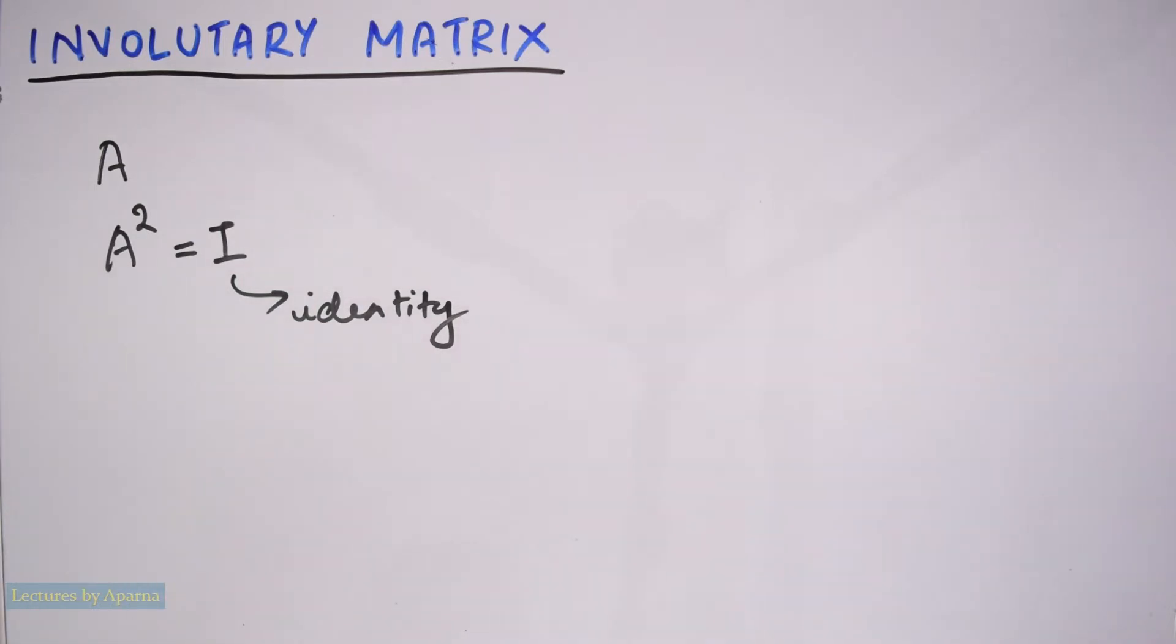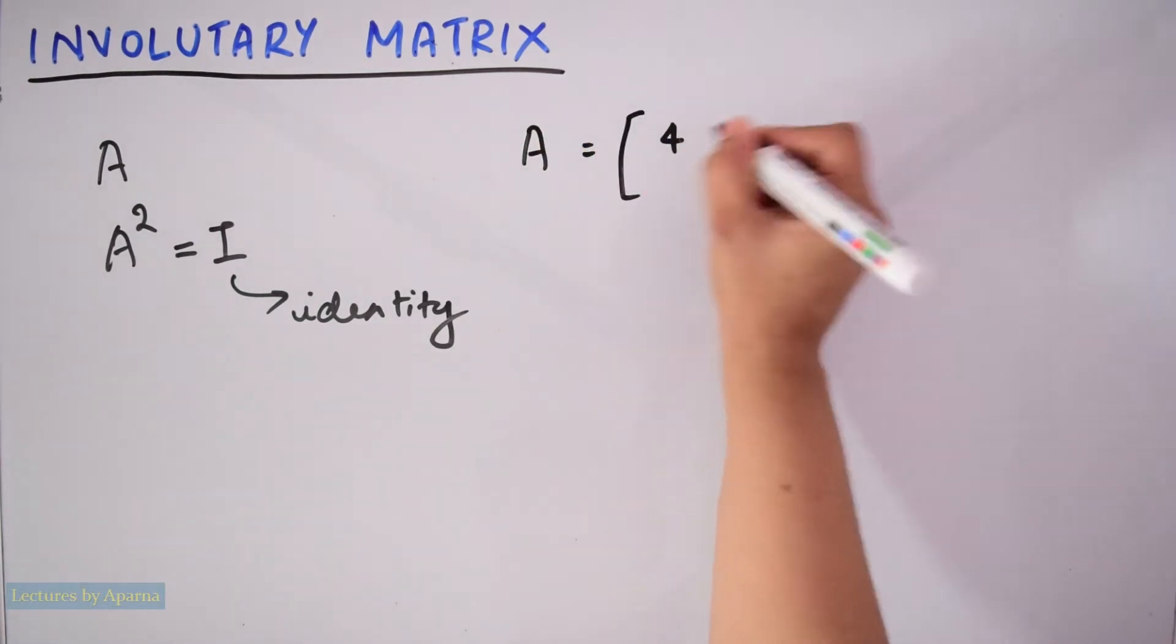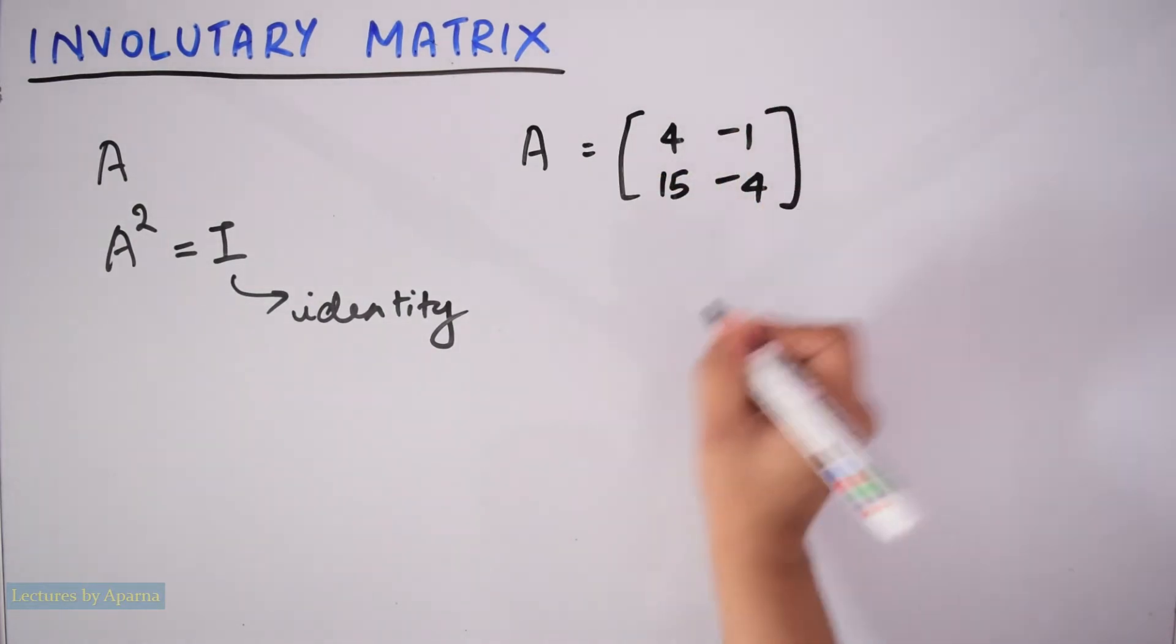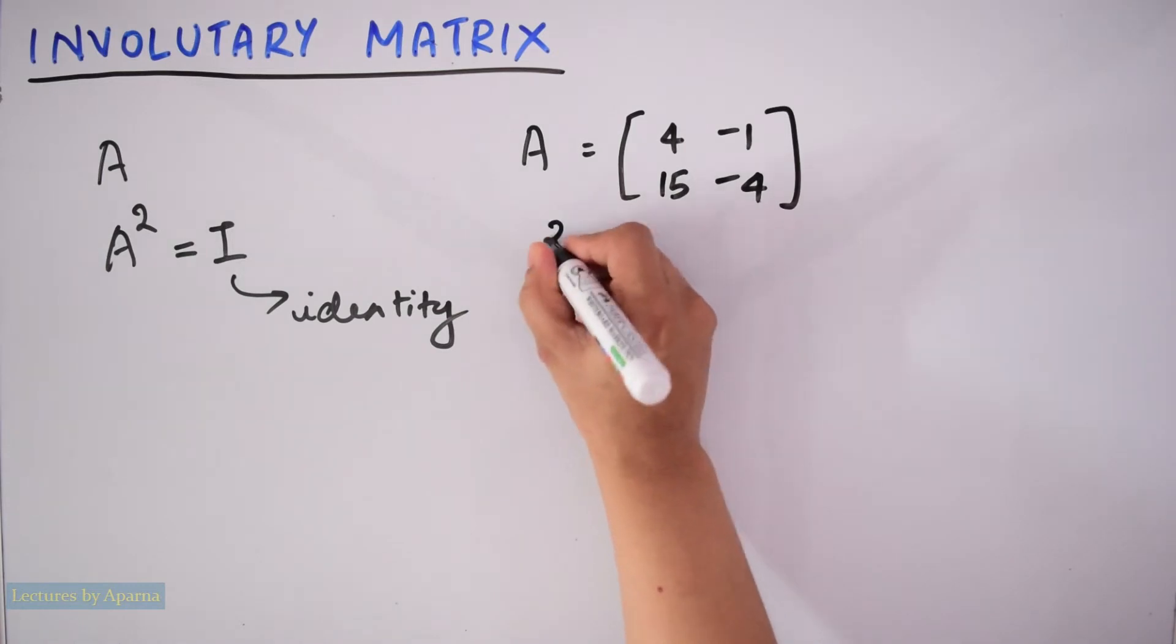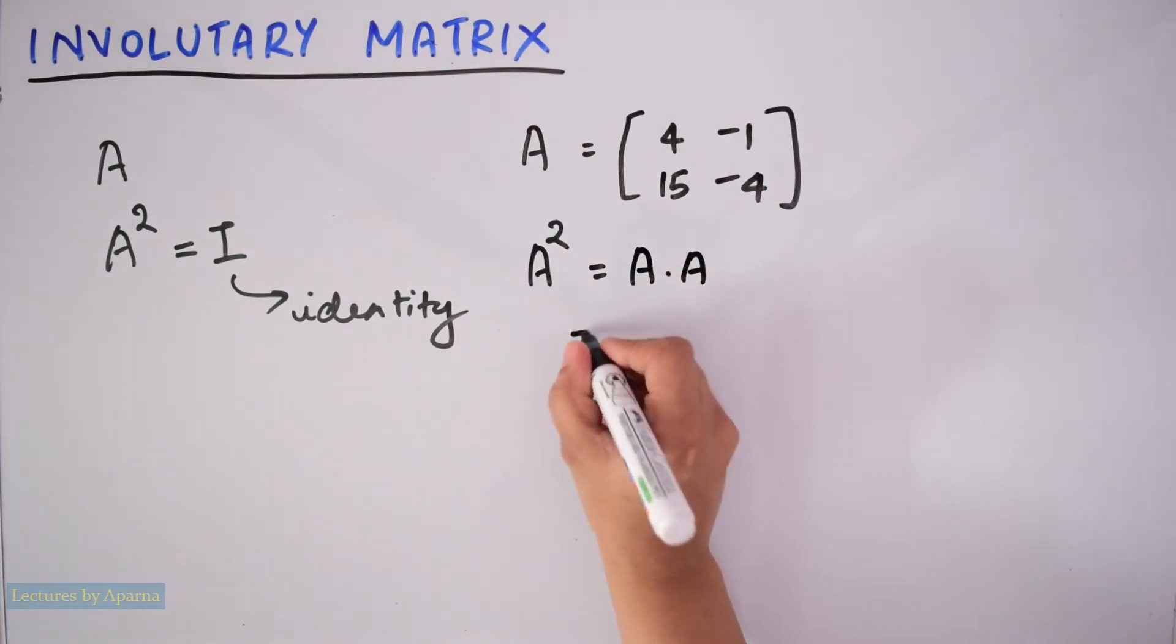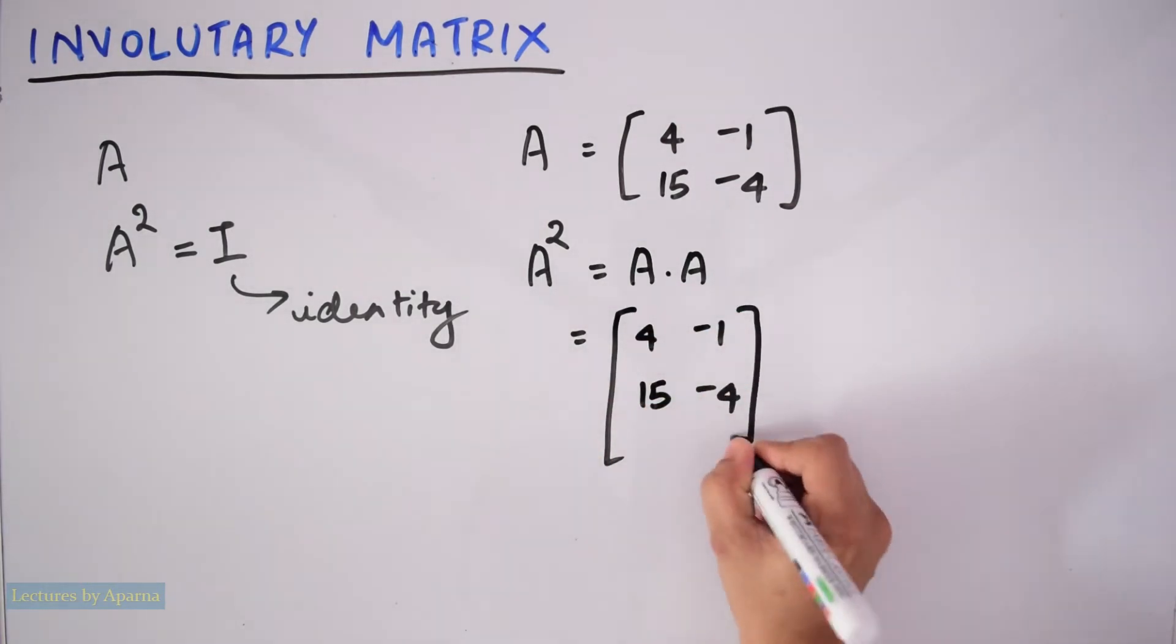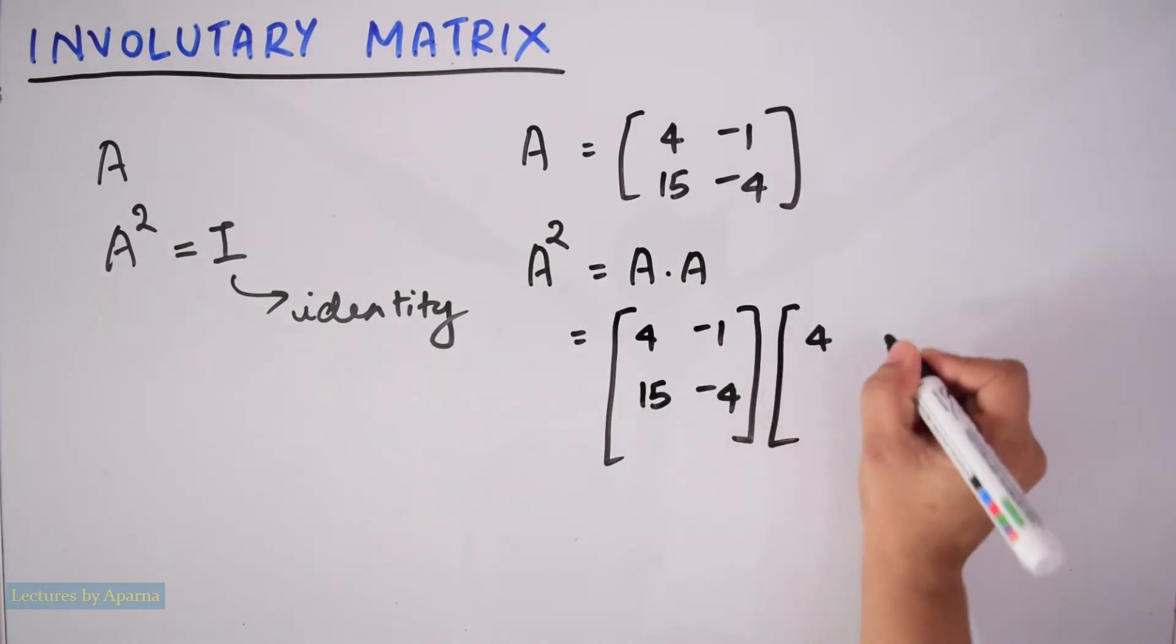So for example, I am taking a matrix A equal to 4 minus 1, 15 minus 4. Now I have to find A square. A square is equal to A into A. So this A square is equal to 4 minus 1, 15 minus 4 into 4 minus 1, 15 minus 4.